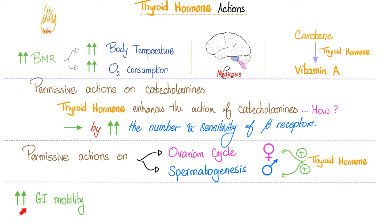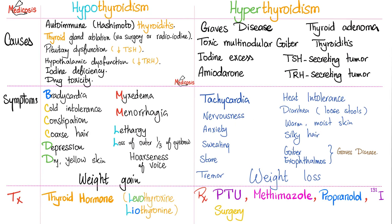Thyroid hormone also increases gastrointestinal motility. Therefore, if you have too much thyroid hormone — hyperthyroidism — you get diarrhea from too much motility. But if you have hypothyroidism, too little thyroid hormone, you get constipation from no motility. If you're just getting started, focus on the symptoms. Let's compare between hypothyroidism and hyperthyroidism.